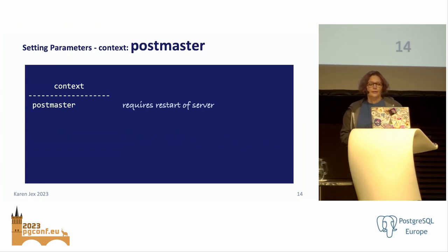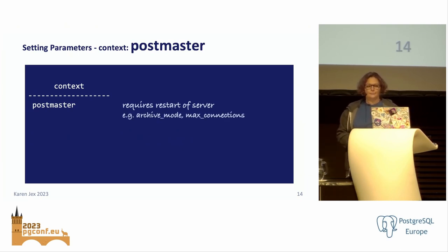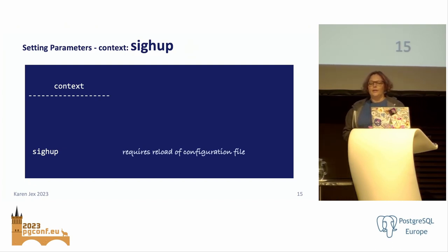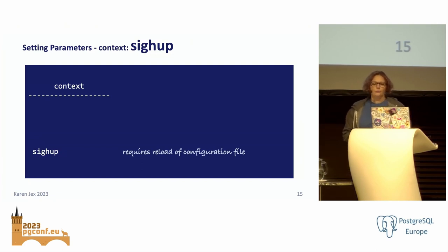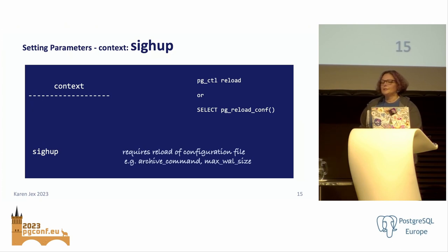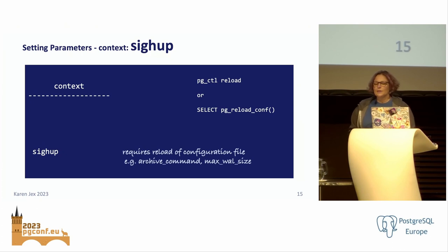To change a postmaster parameter, you'll need to restart the server — things like archive_mode or max_connections. To change a SIGHUP parameter, you don't need to restart, but you do need to provide the modified configuration file to Postgres using pg_ctl reload or SELECT pg_reload_conf(). This applies to things like archive_command, log_destination and other logging parameters, max_wal_size, and most of the autovacuum parameters.